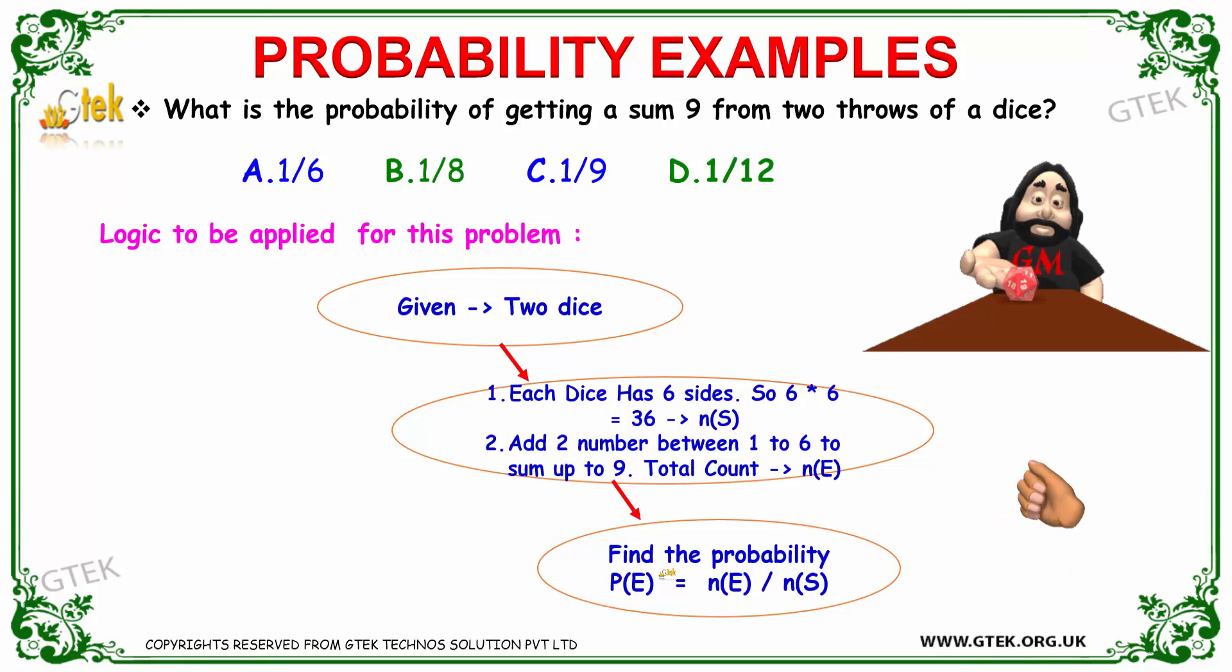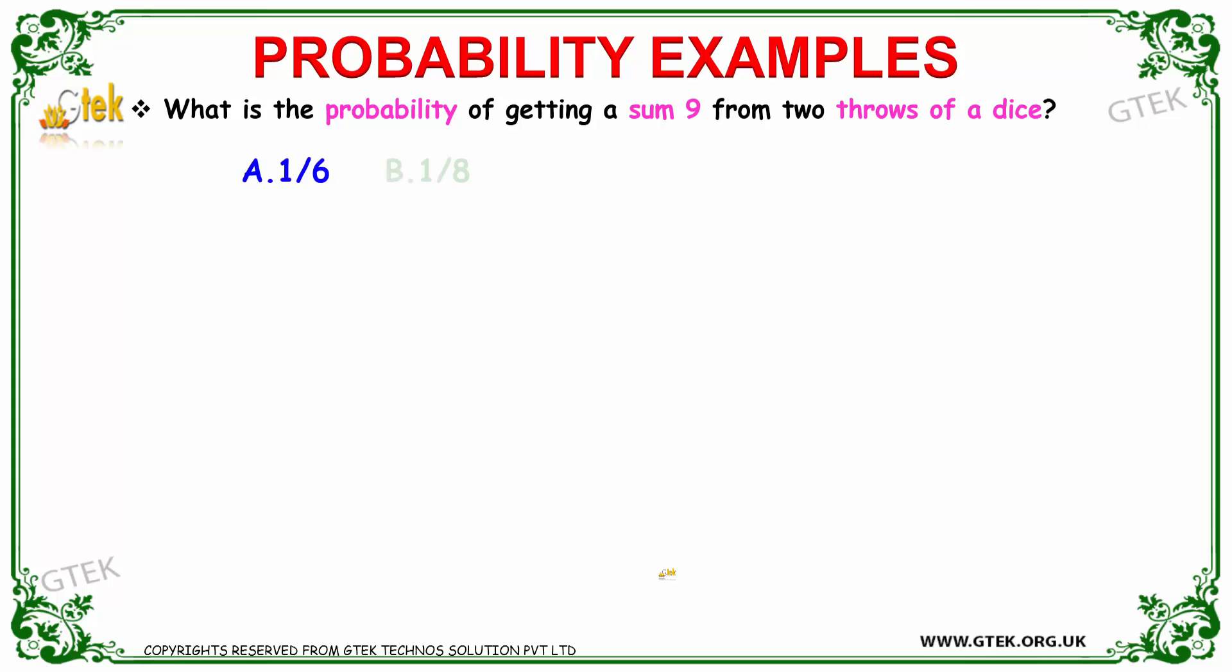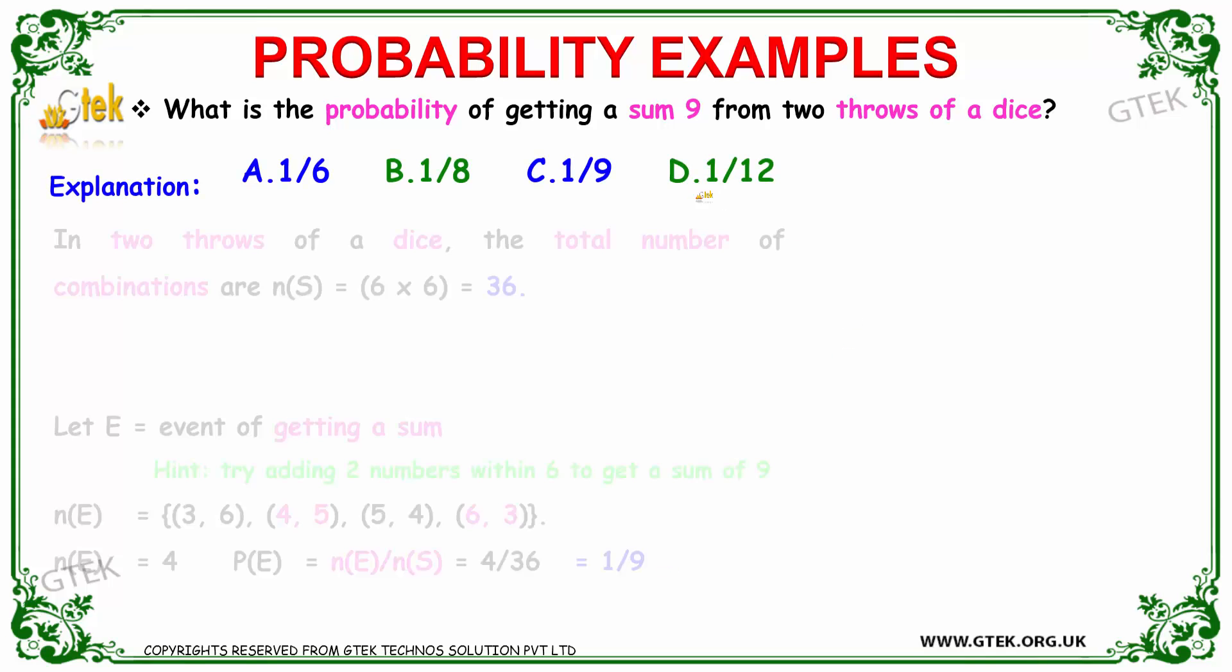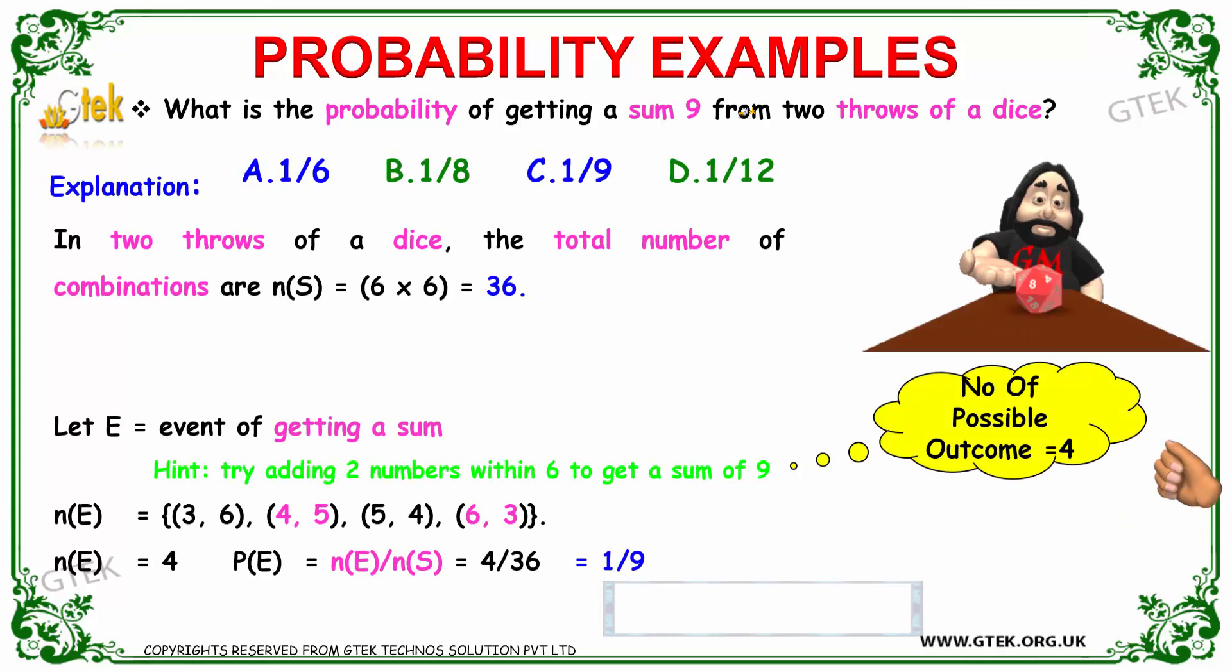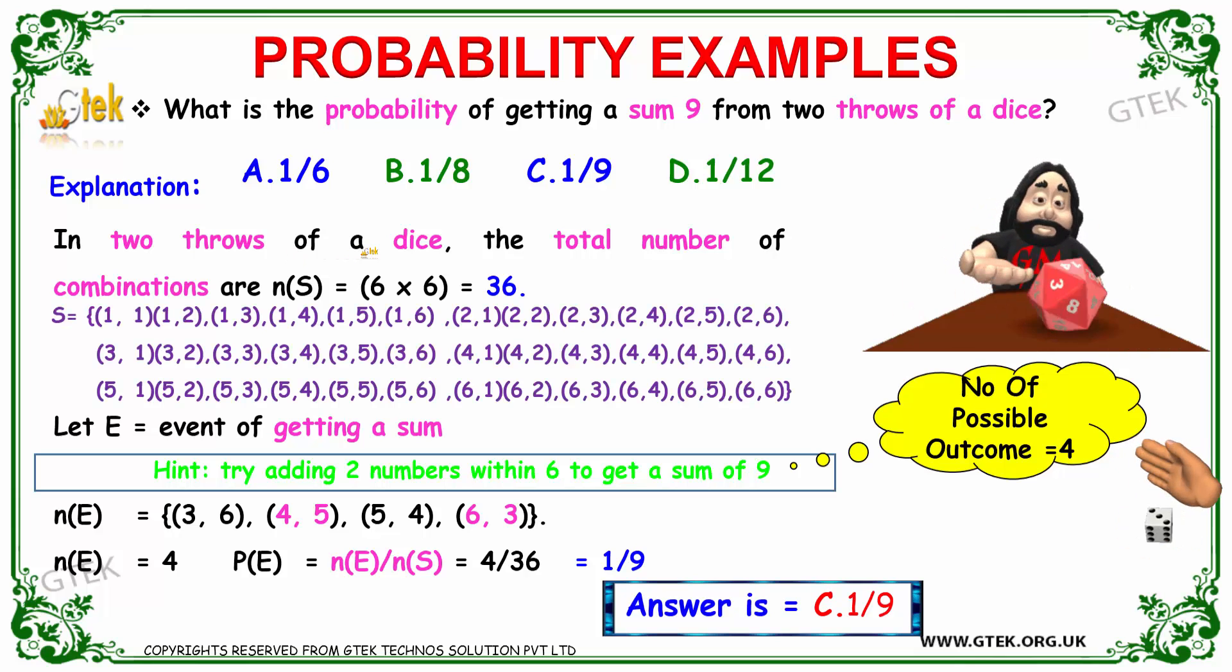We need to find the probability of getting a sum of 9 from two throws of a dice. If you throw a dice, the total number of combinations are 6 × 6, so 36 combinations - that's the sample space.